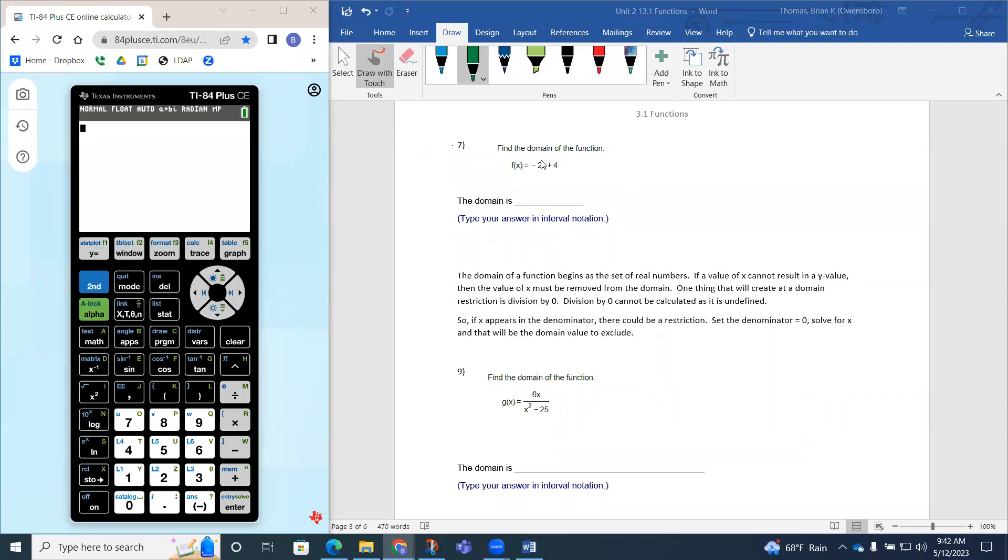So question 7 says, find the domain of the function. The function is f(x) equals negative 2 times x plus 4. So the domain is, and they want you to type this answer in what we call interval notation.